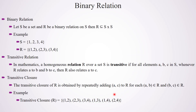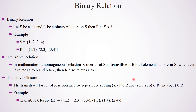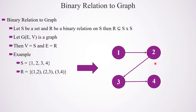Similarly, (1,4) means there is a path from 1 to 4 in the graph: 1, 2, 3, 4. There is a path from 1 to 4. One more element in the transitive closure is (2,4), meaning there is a path from 2 to 4. Actually there is no direct edge from 2 to 4, but there is a path from 2 to 4.